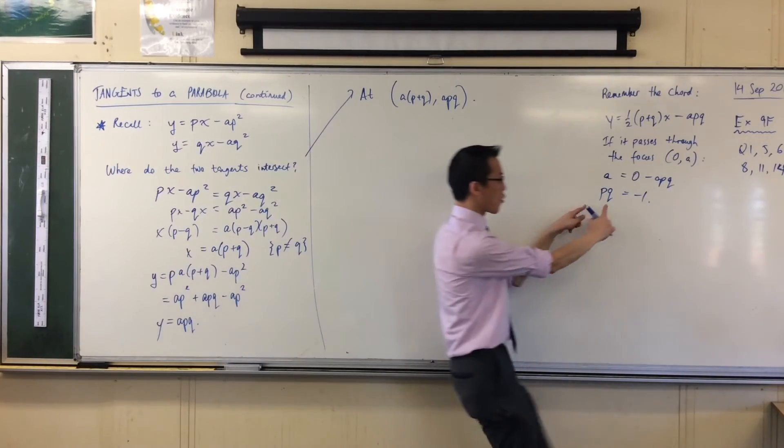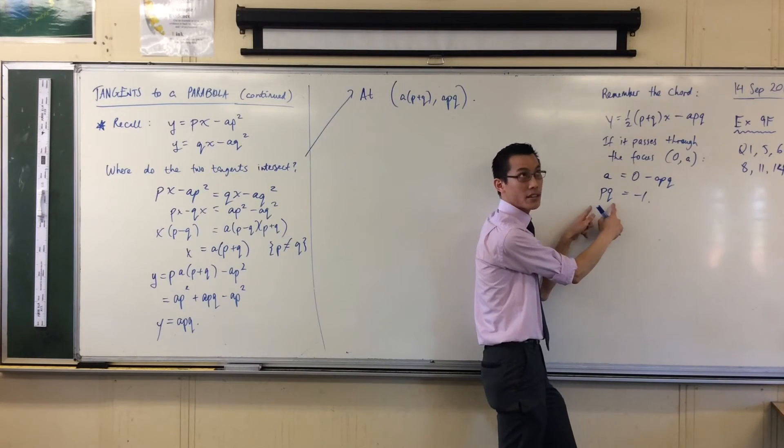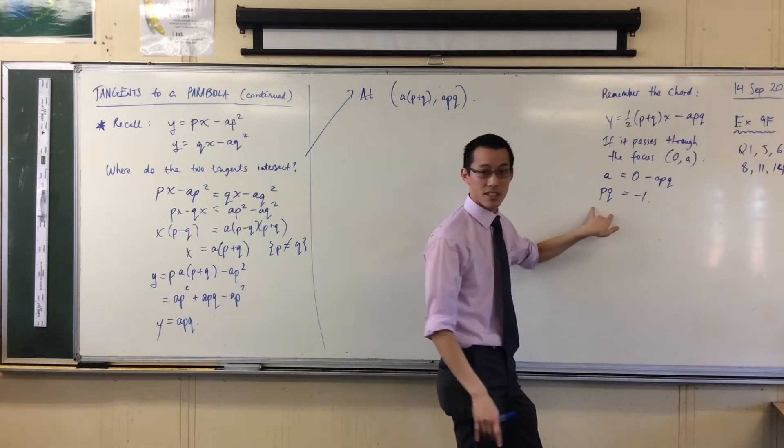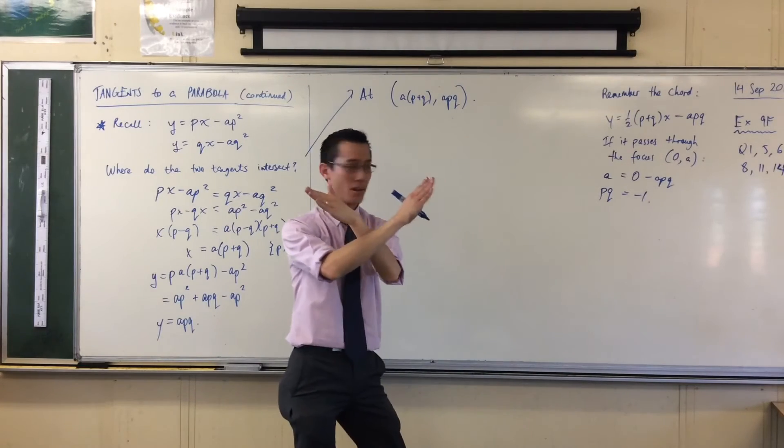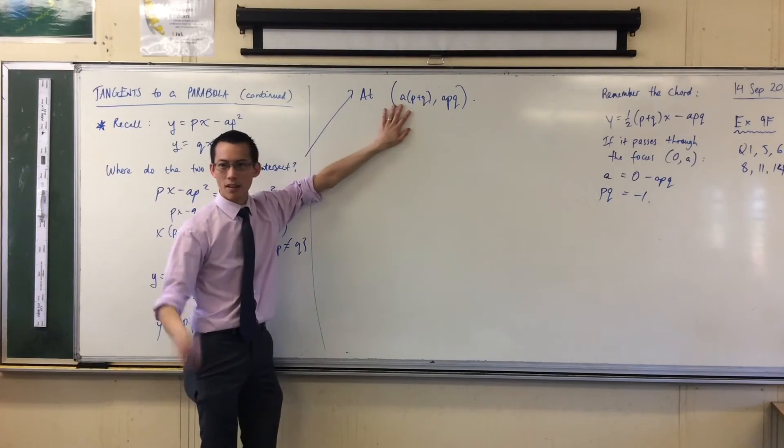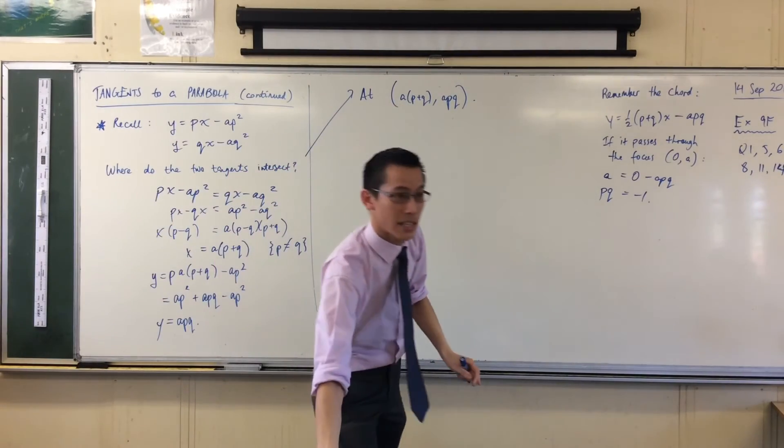Now, what does that mean? Do you remember what that means? It means the gradients of the tangents, they multiply to minus 1, which means the tangents themselves are perpendicular. The tangents themselves, they intersect at this point. But hold on a second. This tells us even more.